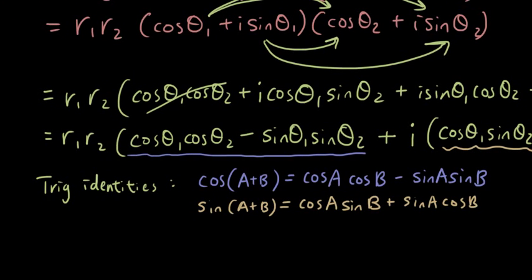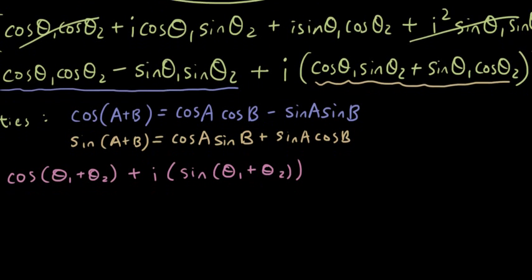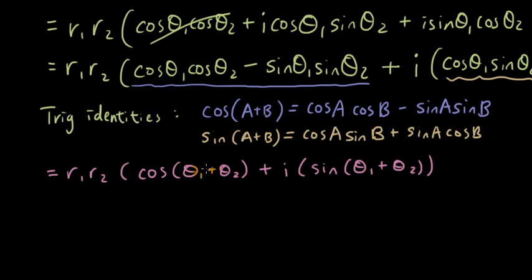So what does that mean? Well, we can simplify it so then all of this gives us equals r1 r2 bracket cos(θ1+θ2). In this case it's just θ1 plus θ2. And then we've got plus i bracket. And then again we're using the trig identity to simplify all this into sin bracket θ1 plus θ2.